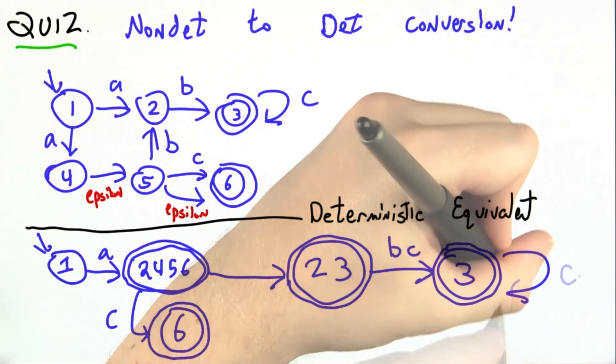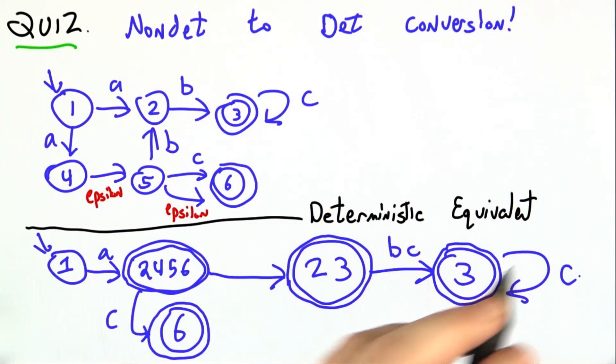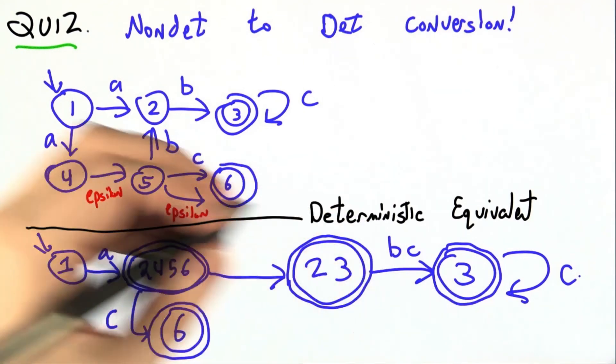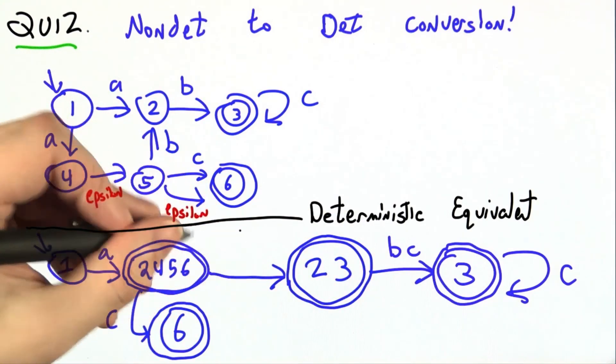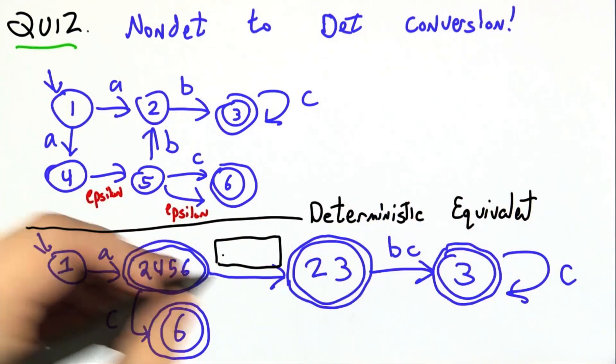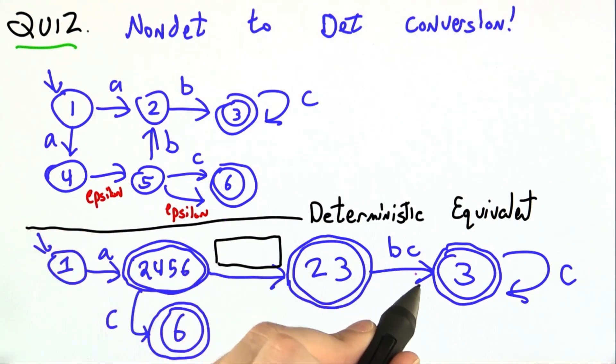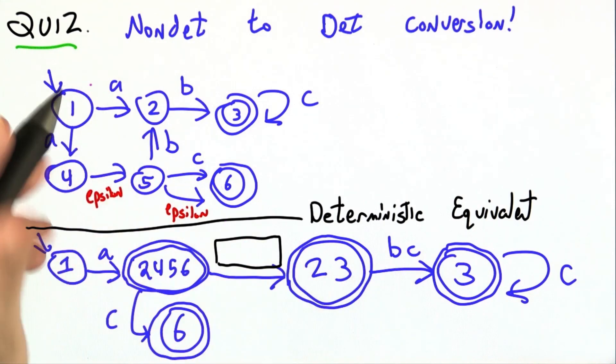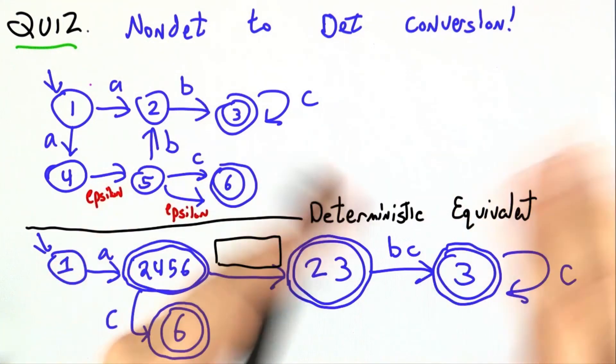And if I'm in state 3, there's a self-loop back to state 3. Now I've filled out almost all of this deterministic equivalent, but I forgot to label an edge. Help me out. As the quiz, what should the label for this edge be so that this deterministic equivalent and this non-deterministic machine accept exactly the same language?